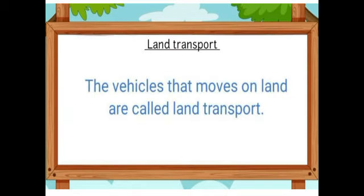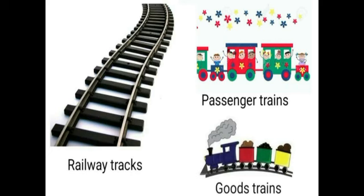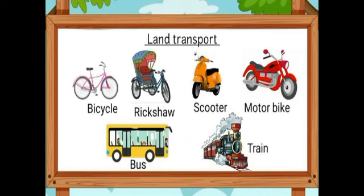First, we learn land transport. The vehicles which move on land are called land transport. Some examples are bicycle, rickshaw, scooter, motorbike, bus, train, etc. Among these vehicles, the train is the fastest land transport. It runs on railway tracks. Trains that carry passengers are called passenger trains, and trains that carry goods are called goods trains. India's fastest train is Gatimaan Express, which runs between New Delhi to Agra. Land transport is the most common means of transport.